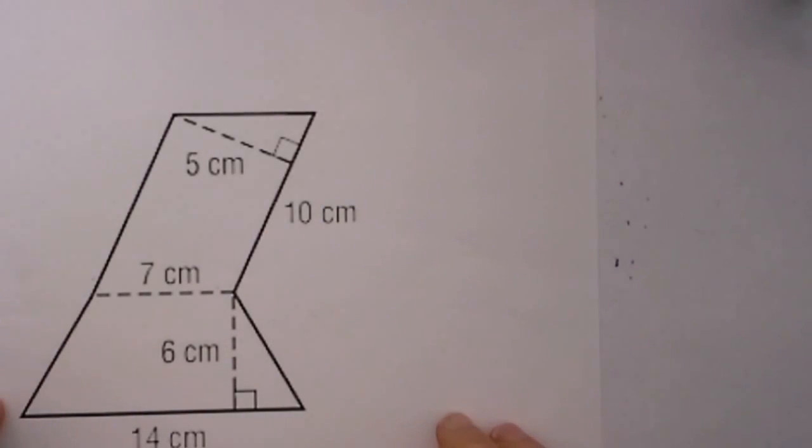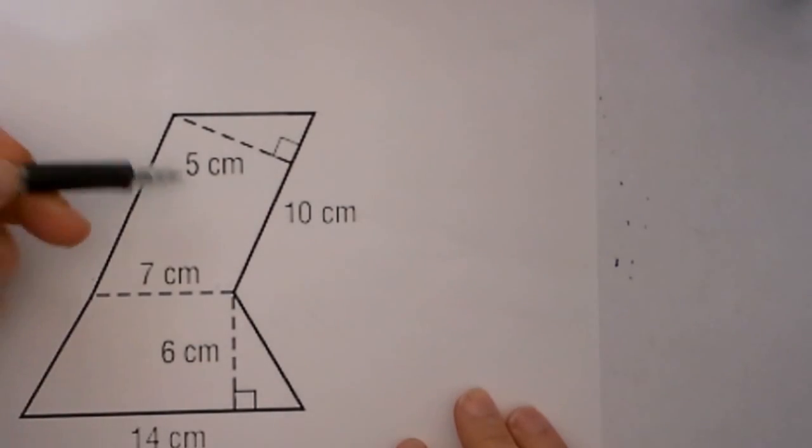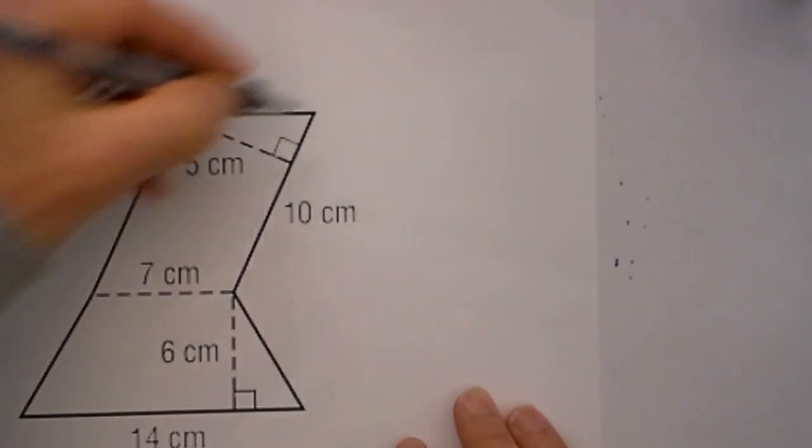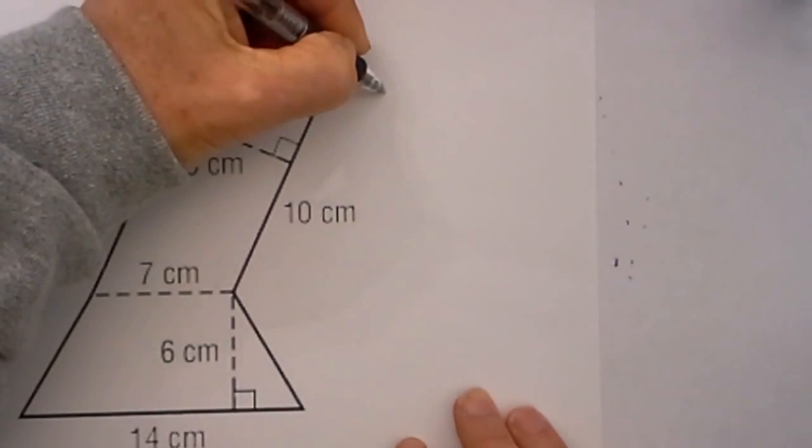Let's go ahead and find the area of this composite figure. Remember, step one is to identify the types of shapes. We have a parallelogram here and we have a trapezoid here. A trapezoid has two parallel bases, so let's first find the area of this parallelogram.